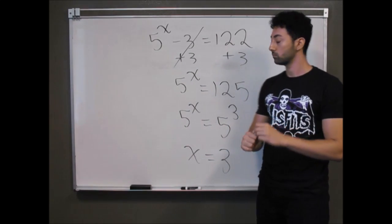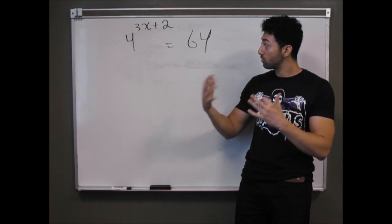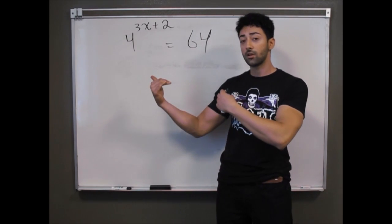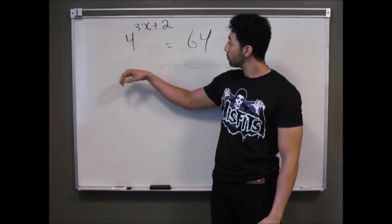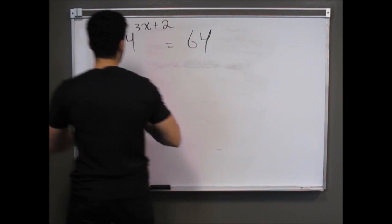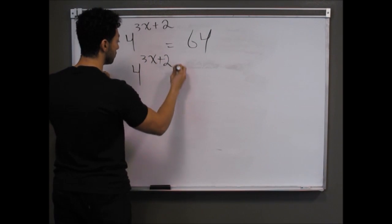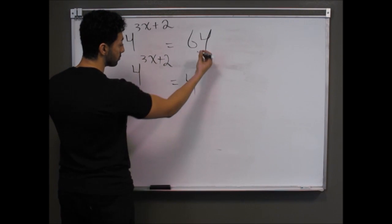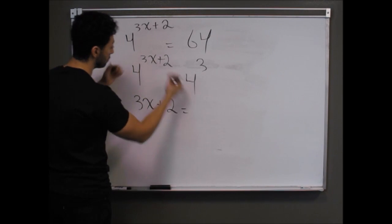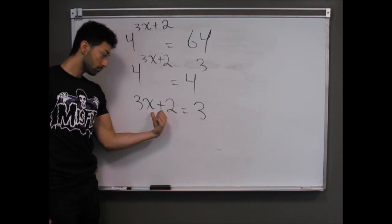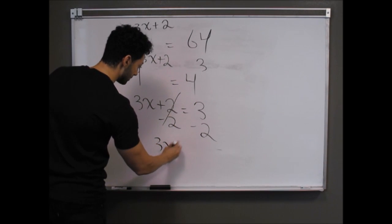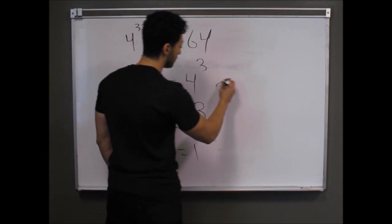The process is: first check whether the exponential term is isolated, then get both sides to the same base. Here the term 4 to the power of 3x plus 2 is already isolated, so I rewrite 64 as 4 to the third power. With a common base, I pull out the exponents: 3x plus 2 equals 3. Solving that linear equation — subtract 2 from both sides to get 3x equals 1, then divide by 3 — gives x equals one-third.